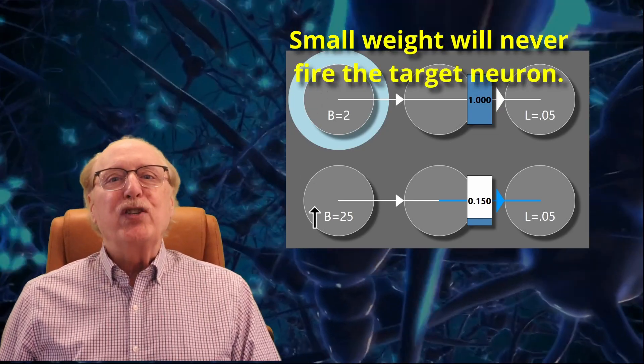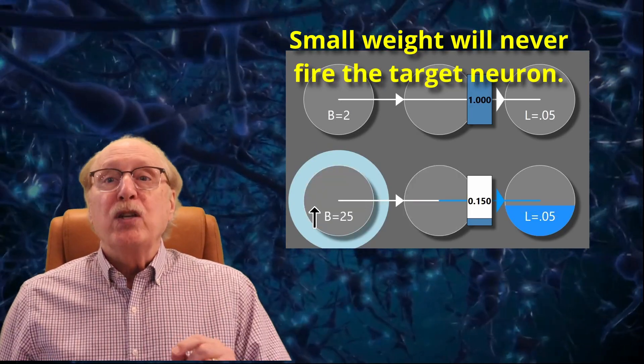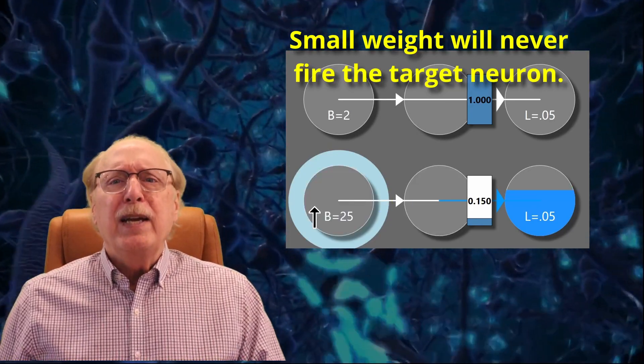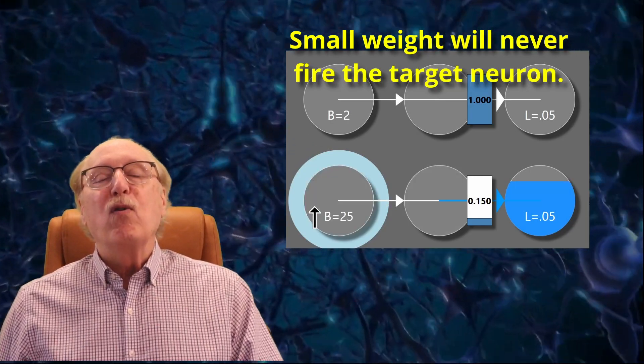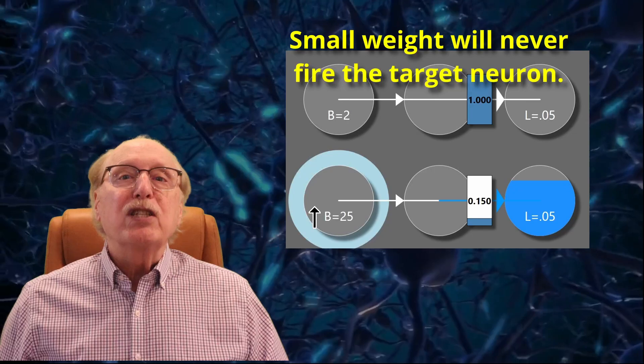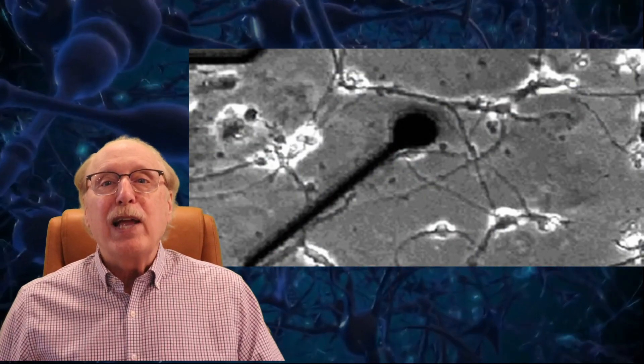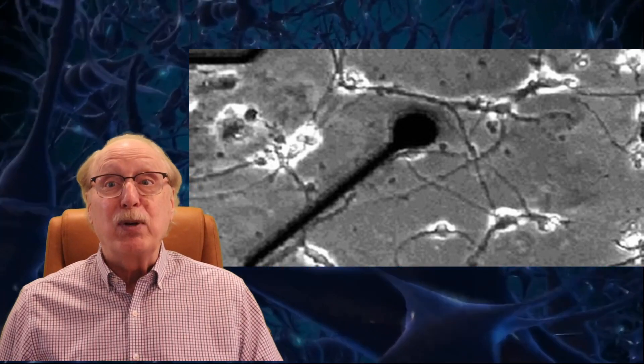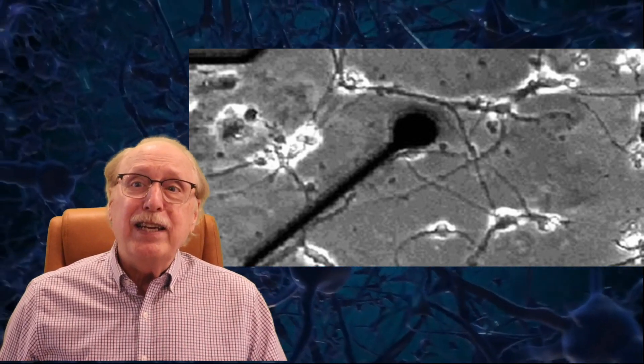To complicate matters, if the synapse weight is small, the target activation will never be sufficient to overcome the leakage. So the target neuron will never ever fire. In this example, if the weight is below 0.15, no amount of maximum rate spiking will overcome the leakage. So neurons can only use low synapse weights in combination with other synapses. In the lab, we can place an electrode on a neuron and measure precisely how an incoming spike changes the membrane potential and deduce the precise synapse weight. But your brain has no such technique available.